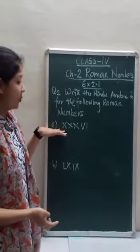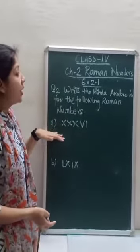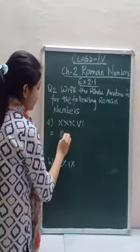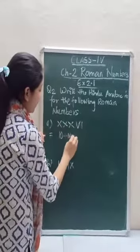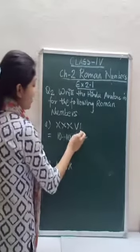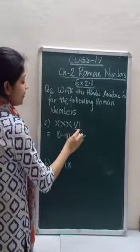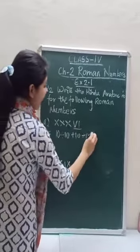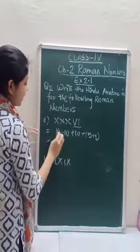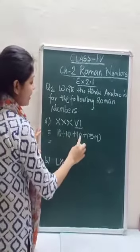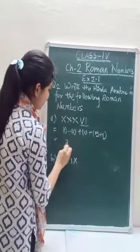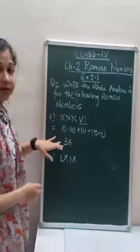Question number 2: write the Hindu-Arabic number for the following Roman numbers. For XXXVI — value of X is 10, again X is 10, again X is 10, and VI is 5 plus 1 equals 6. So 10 plus 10 plus 10 equals 30, plus 6 equals 36. This number is 36.